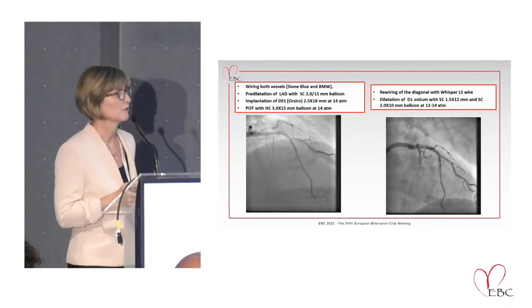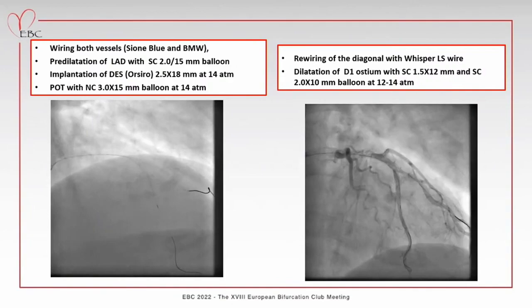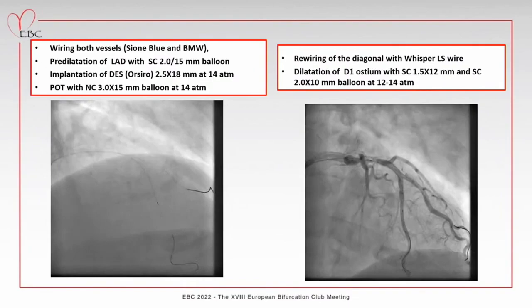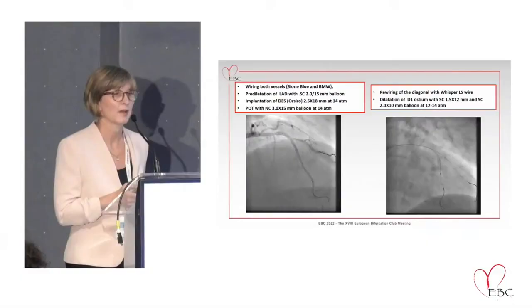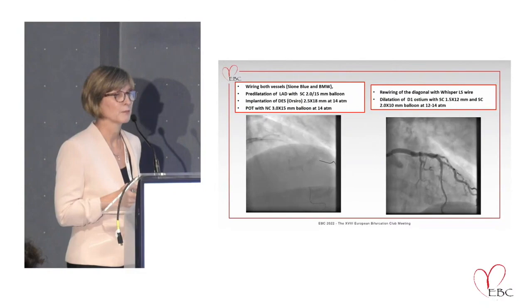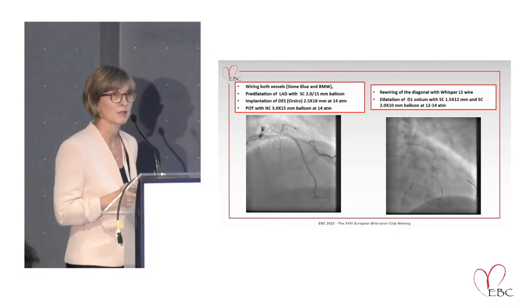I wired both vessels and pre-dilated with a semi-compliant 2.1 x 15mm balloon. On QCA the distal LAD target was about 2.5mm. I implanted a drug-eluting stent 2.5 x 15mm at 14 atmospheres, then did a POT with a non-compliant 3.0mm balloon. Not satisfied with the diagonal branch, I rewired with a whisper wire and dilated the ostium with a 1.1 x 20mm semi-compliant balloon at 12-14 atmospheres.